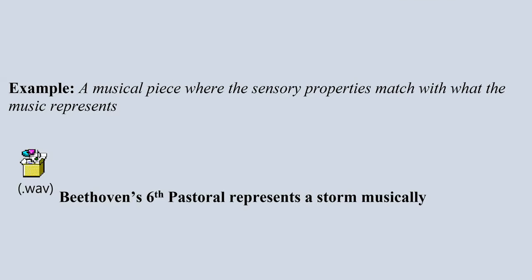We can also think of this dependent or impure beauty in something like a work of music. Beethoven, in contrast to Bach, is a composer who's often appreciated for the representational qualities of his musical works. For example, here in his Sixth Pastoral, here Beethoven means to represent the approach of a powerful storm